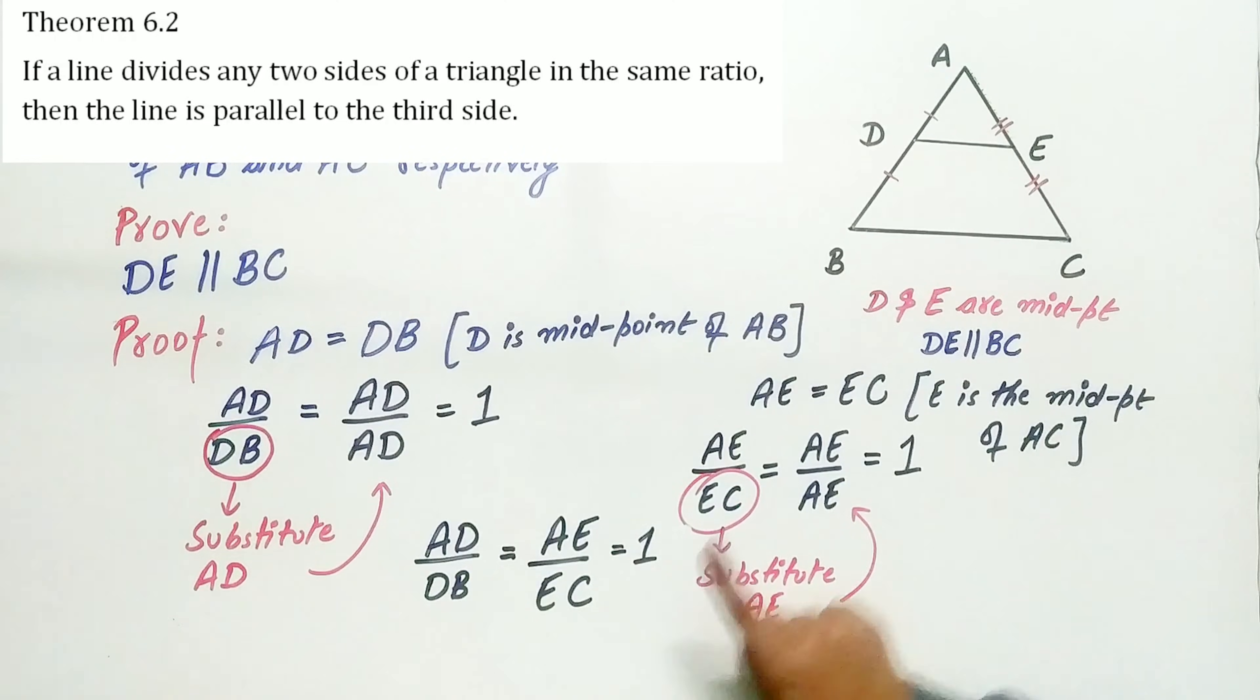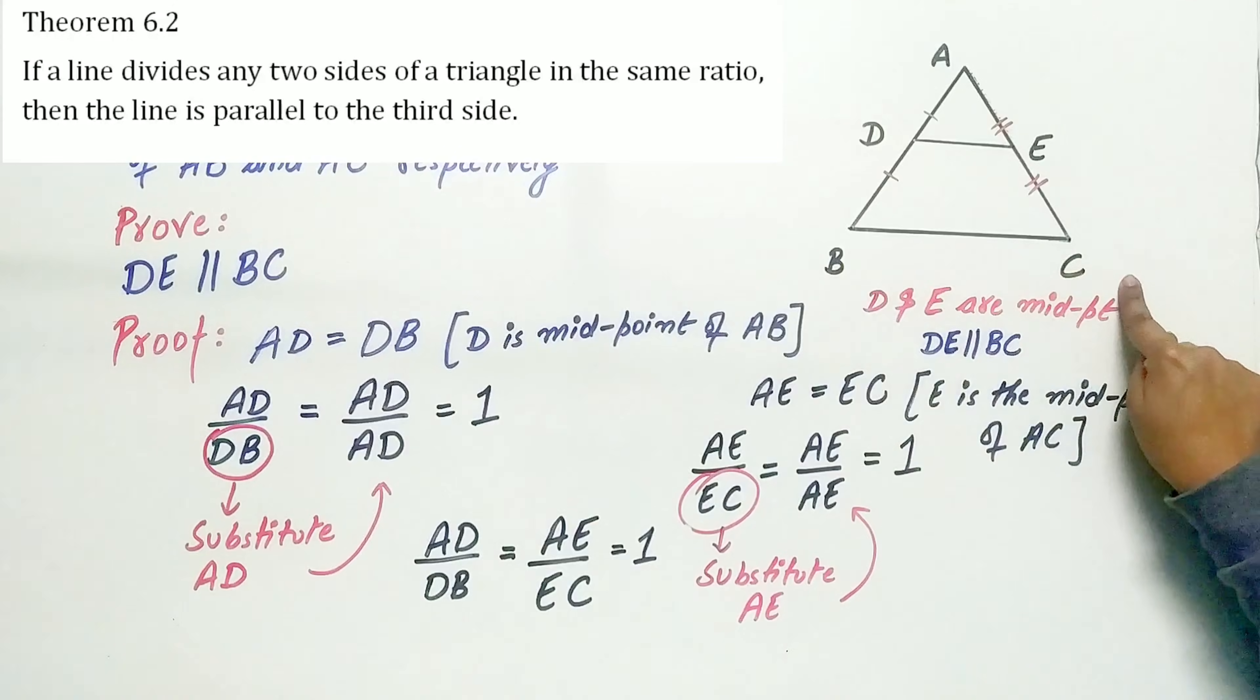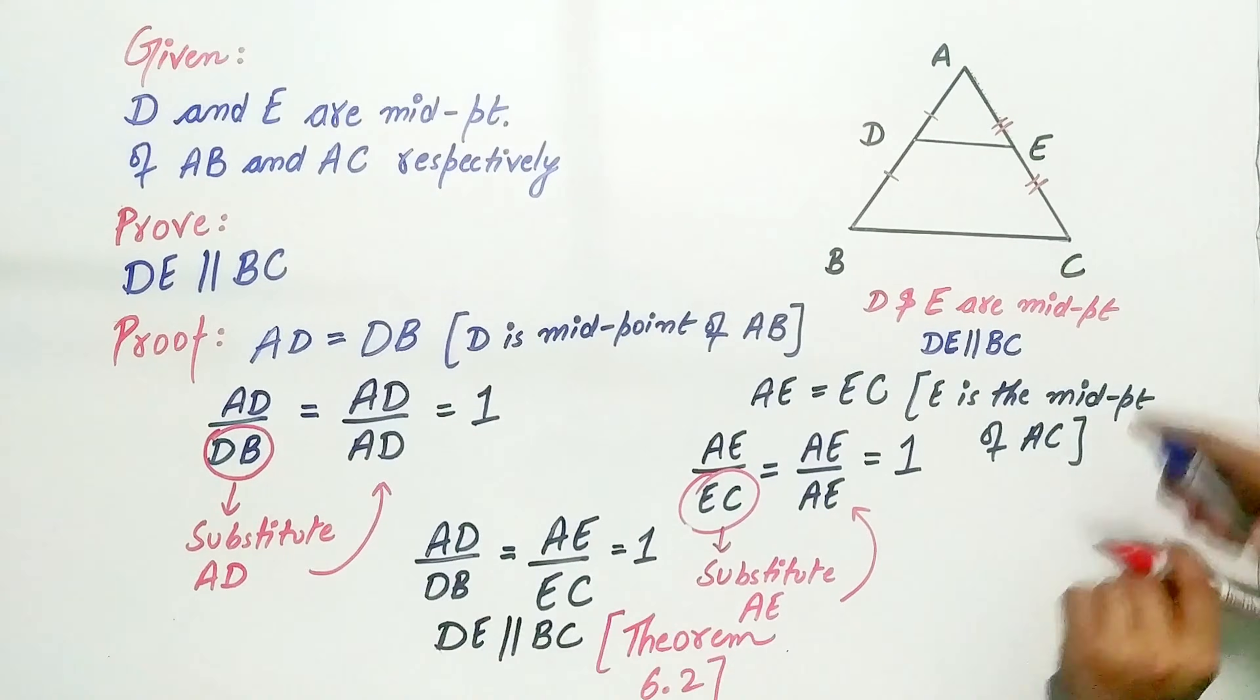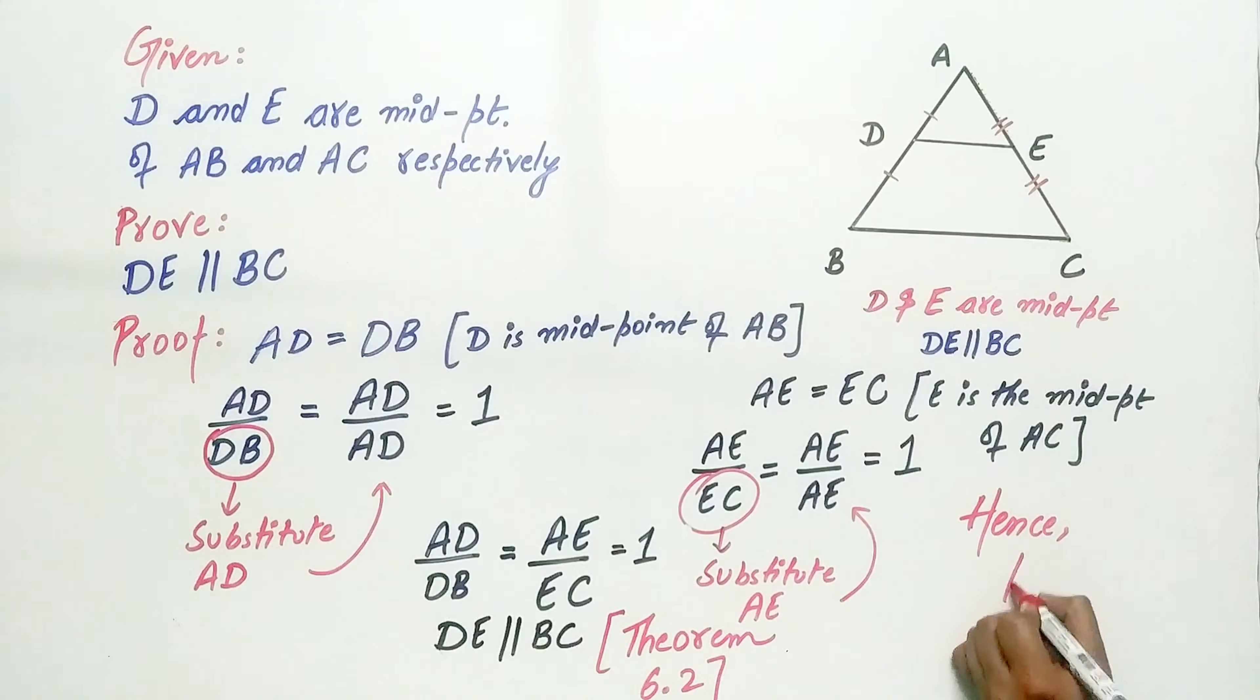Hence, DE is parallel to BC via theorem 6.2. And hence, proved.